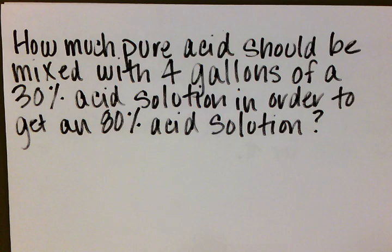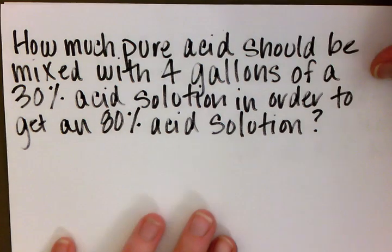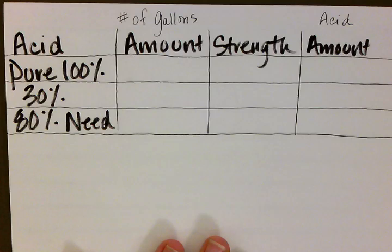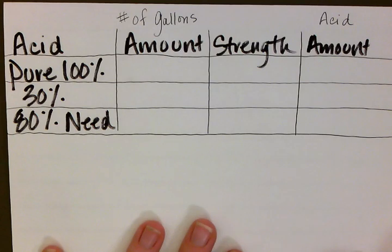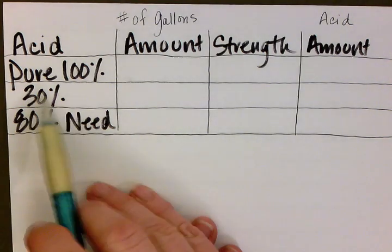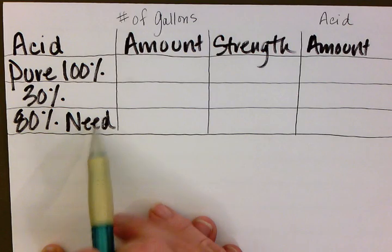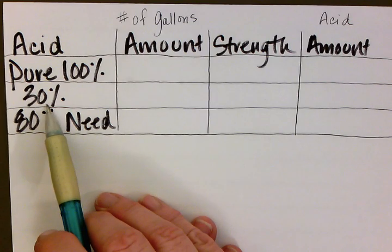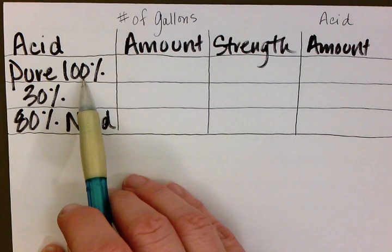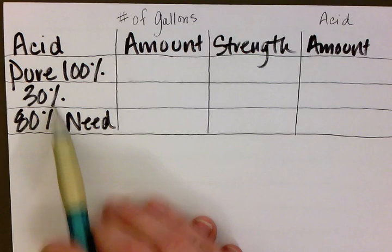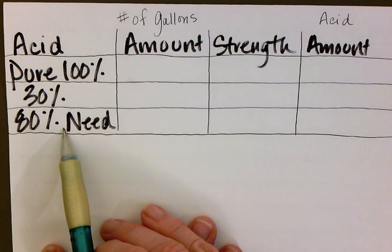The way we want to set this up is to put a little chart together. We have our acid here. We know that we need an 80% solution and we have a certain amount of the 30% solution, so the question is how much of the 100% pure acid solution do we add to the 30% solution to get what we need in that 80%.